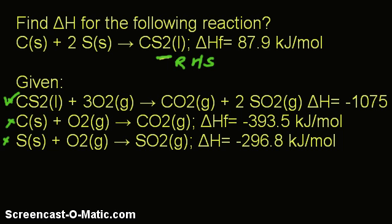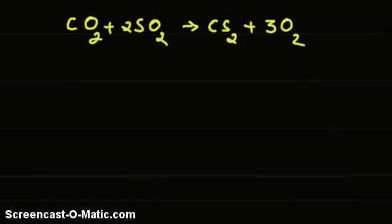Doing the same, we get that reaction with a change of direction. Now, since we have reverted or reversed the direction of the reaction, the enthalpy will also be in reverse value. So, instead of +1075, it will have −1075.